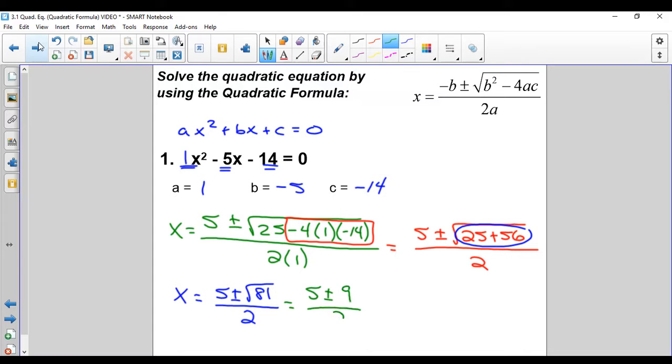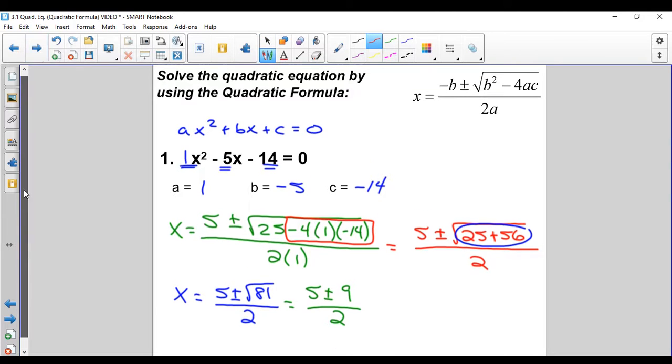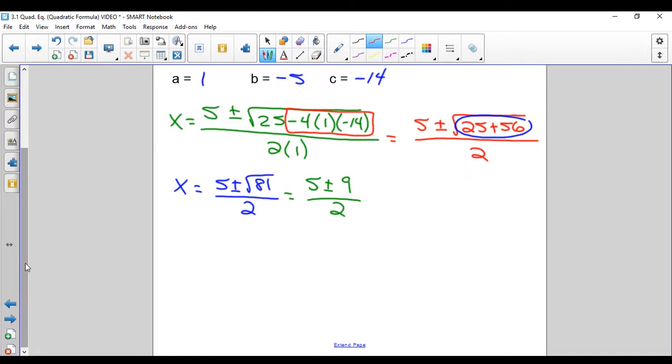Now, almost done. Just like last week with the square root property, we have two answers. We have 5 plus 9 over 2. 5 plus 9 is 14, 14 over 2 is 7. There's one answer. Second answer, we got 5 minus 9 over 2, so negative 4 over 2, which is negative 2. There's our other answer. That's using the quadratic formula.